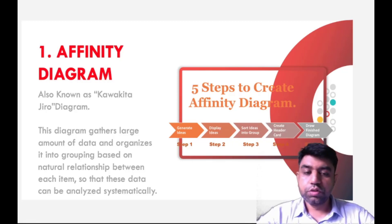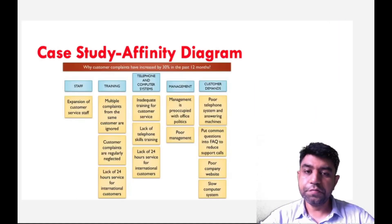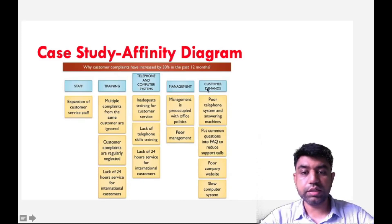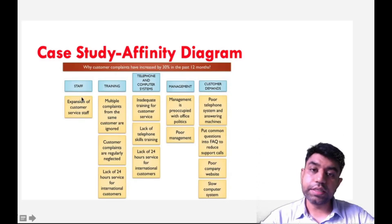Let us directly take one example so the concept gets clear. We need to analyze why the customer complaints have increased by 30% in the last 12 months. Some company wants to do analysis on this part. Their complaints from the customer have been increased by 30% within a year. They can go for this Affinity Diagram which is used to improve the quality. The key reasons could be staff, training, telephone and computer systems, management, and customer demands. These are the key reasons which are defined by different color sticky notes. If you need to represent that data on one chart, you can use sticky notes of different colors. The main key activities are defined over here.